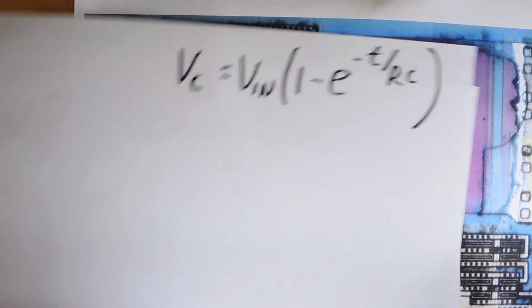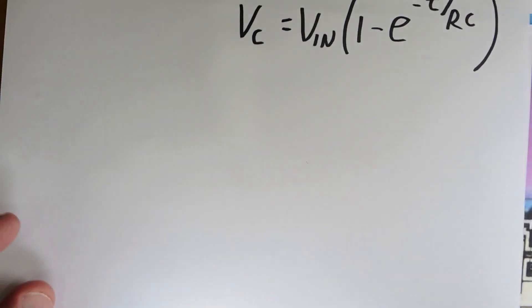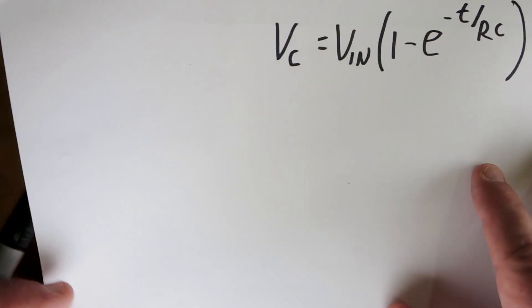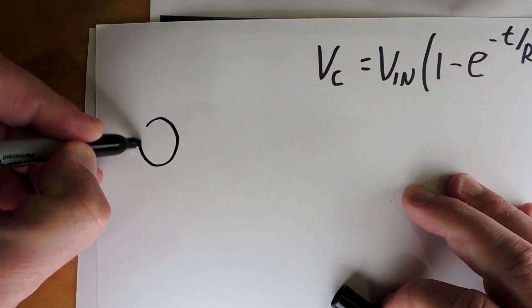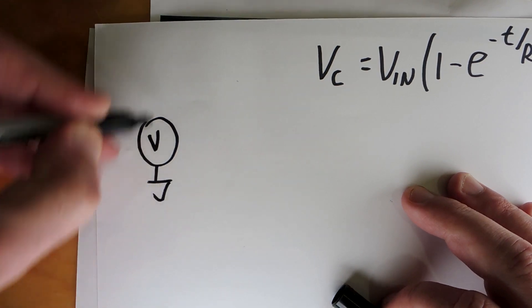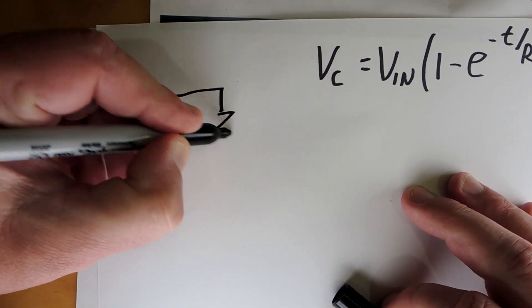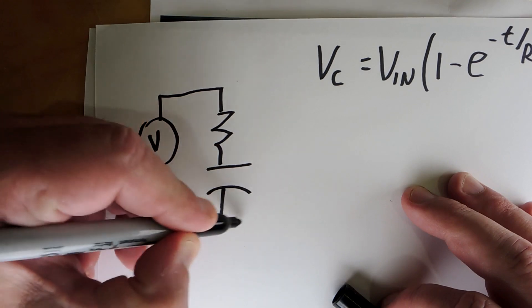Well everything's built around this equation of Vc equals Vn times in this formula. It's basically the formula for charging a capacitor. If you were to take a voltage source, a positive voltage source, and then construct a resistor and a capacitor, a real classic circuit.